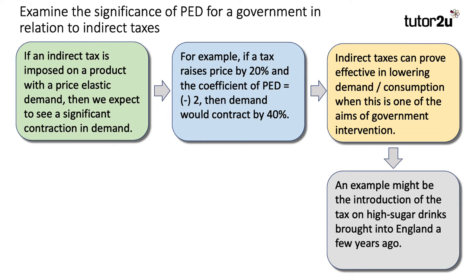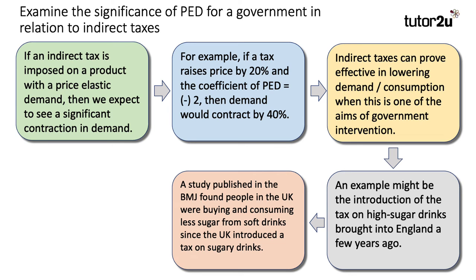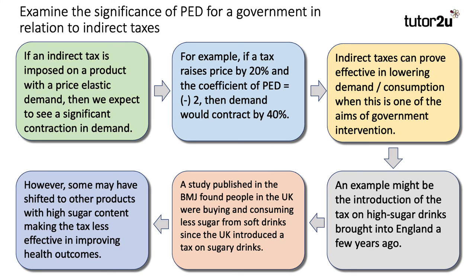An example is the introduction of the tax on high sugar drinks in England in 2018. The aim wasn't necessarily to maximise tax revenue, although the extra money was used for things like school sports. A study published in the British Medical Journal found that people in the UK were buying and consuming less sugar from soft drinks, so the sugar tax seems to have worked in terms of reducing sugar consumption. Some of that was due to the tax, and some due to producers reformulating their drinks — Diet Coke, Coke Zero, etc. — to avoid the tax. In terms of evaluation, some people may have shifted to other products like sugar biscuits, which makes the tax less effective in improving health outcomes.